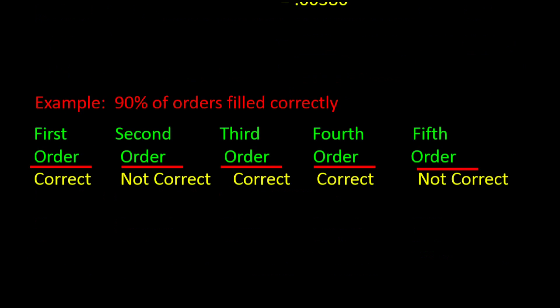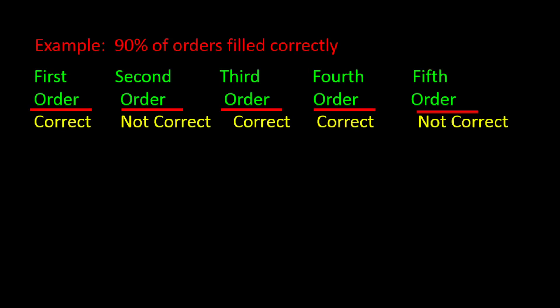Let's do another problem. We are monitoring a fast food restaurant and notice that order takers fill 90% of orders correctly. What is the probability that 3 out of 5 orders will be filled correctly? Let's write out a sequence of: correct, not correct, correct, correct, and not correct. That gives a probability of P = 0.9 for correct orders and 1 − P = 0.10 for incorrect orders.